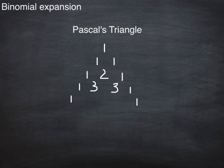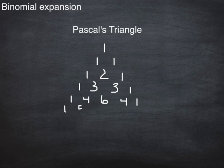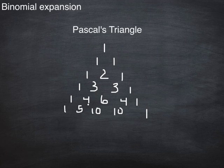To find the fourth row, 1 plus 3 is 4. 3 plus 3 is 6, and 3 plus 1 is 4. You could keep doing this row, or this pattern, forever really. 4 plus 6 is 10, 6 plus 4 is 10, and that is 5.